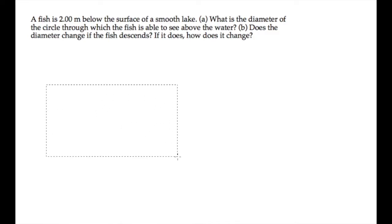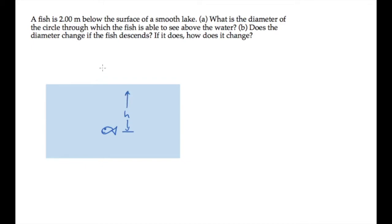The fish in this problem is at a depth h of 2 meters below the surface of a still lake. We're asked to find the diameter of the circle through which the fish is able to see the rest of the world above the water. That circle is sometimes called Snell's window. We'll find its diameter using Snell's law and the idea of total internal reflection.